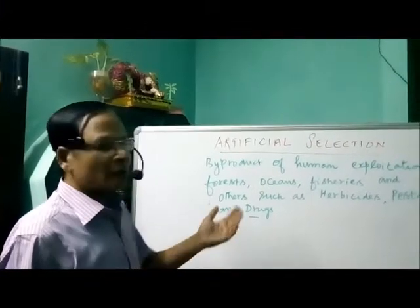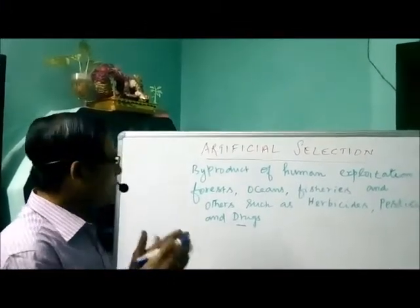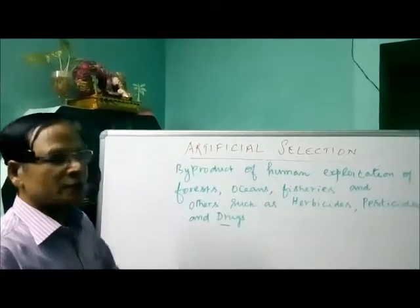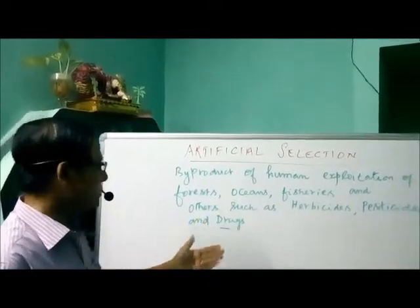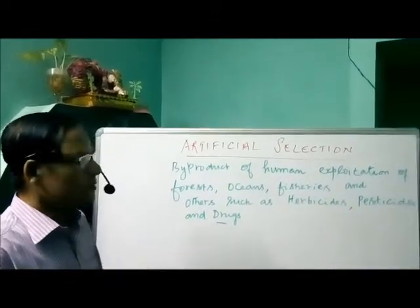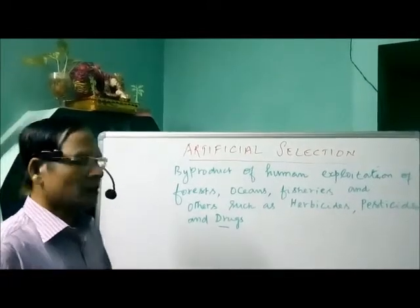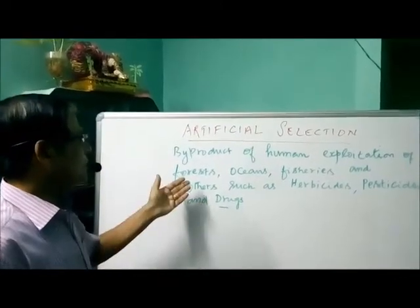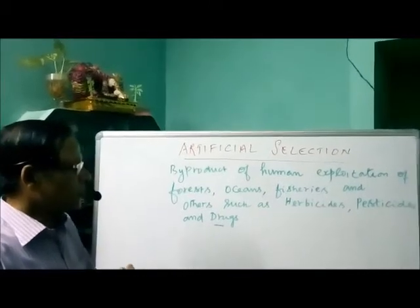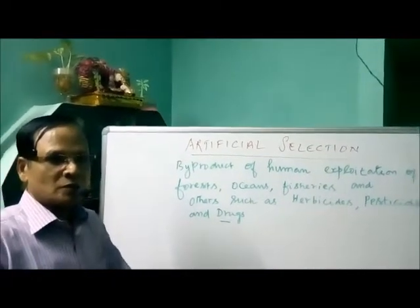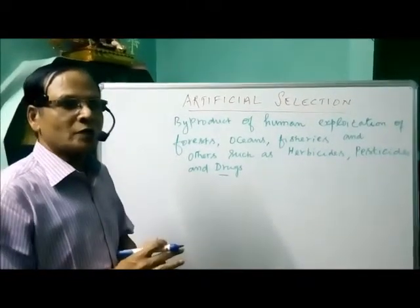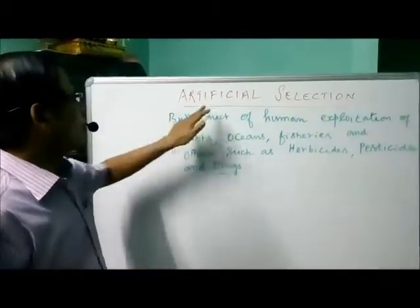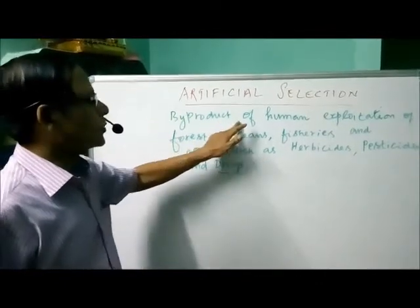Artificial selection is also a kind of anthropogenic evolution. It is the byproduct of human exploitation of farms, oceans, fisheries, and others, such as the use of herbicides, pesticides, and drugs. Use of herbicides or pesticides resulted in forming resistant new species. Likewise, drugs and antibiotics created resistant species. While exploiting oceans, organisms changed their habitat and developed modifications, ultimately selected by nature to form new species. Artificial selection is the byproduct of human exploitation activities.